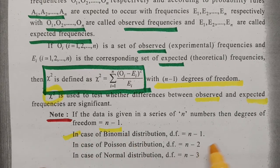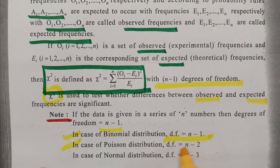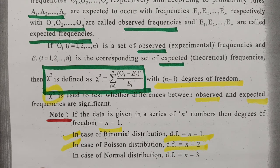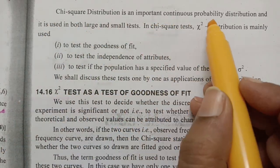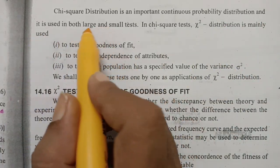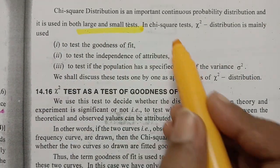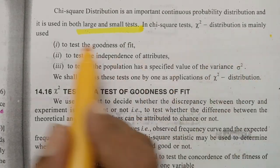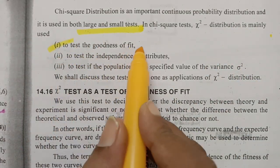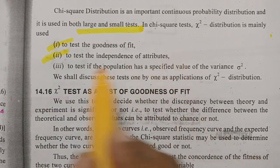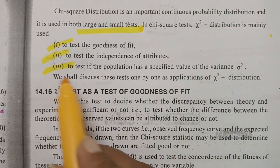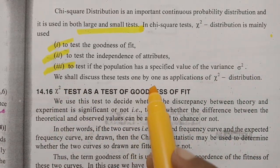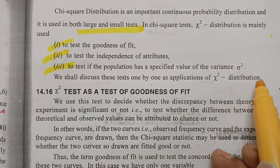In the case of binomial distribution, degrees of freedom is N minus 1. In the case of Poisson distribution, degrees of freedom is N minus 2. In the case of normal distribution, degrees of freedom is N minus 3. Chi-square distribution is an important continuous probability distribution used in both large and small tests. It is mainly used to test the goodness of fit, to test the independence of attributes, and to test if the population has a specified value of the variance sigma.